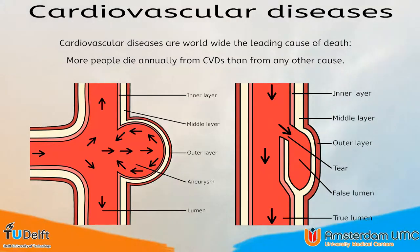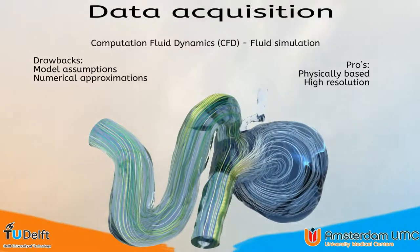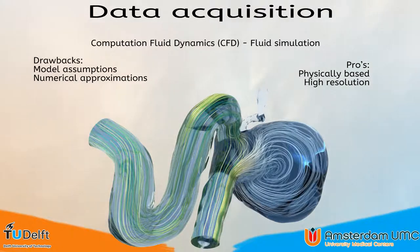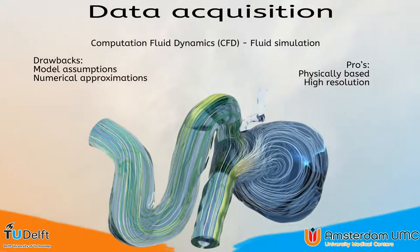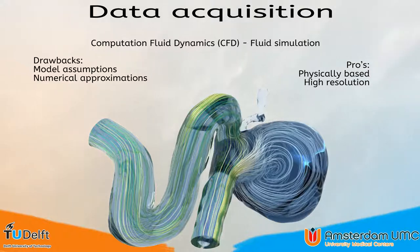This requires a good understanding of the underlying blood flow. To obtain flow data, two methods are typically used. One of these methods is computational fluid dynamics. This yields data that is physically based and has a high resolution. However, it suffers from model assumptions and numerical approximations. Therefore, this data is not completely patient-specific. Small variations in, for example, the segmentation can have a big impact on the flow that is simulated.